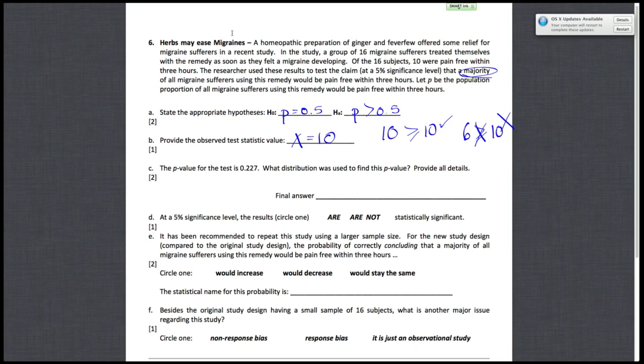All right, so part D, they say the p-value for the test is 0.227, and it asks what distribution was used. So since we're using a small sample binomial instead of a large sample z-test, our distribution is binomial with n and p-naught.